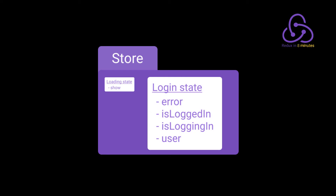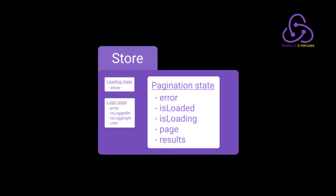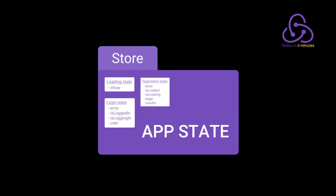We can have multiple states for multiple purposes in our app. For example, the loading state — should the loading be showing or not? The login state — is the user trying to log in? Was there an error on login? Did the user manage to log in? The pagination state — are we loading the pagination? Is it loaded? Was there any error? On which page are we? What results are being presented? All those states combined form the app state, so the store is the entity that has all the app state inside itself.